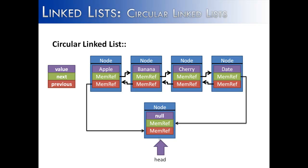So circular linked lists are very similar to doubly linked lists, except the head node points to the tail node and the tail node points to the head node. We also have this other implementation of adding an extra sentinel node to the front of the list as the head, which eliminates the problem of having an empty list and having to handle that inside of our code.